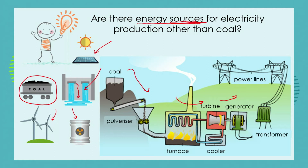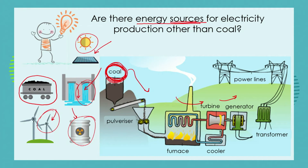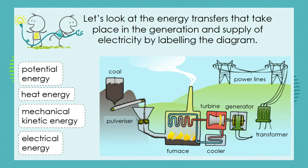In each of these cases our energy transfer system starts with coal, but it could easily start with solar, water, wind, or nuclear power. Because South Africa relies mainly on coal-powered power stations, we're looking at the transfer of energy from coal. We've discussed the source of energy which is coal — now let's look at the energy transfers that take place in both the generation and the supply of electricity.